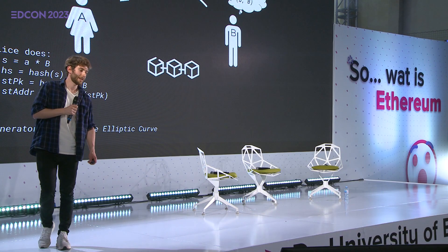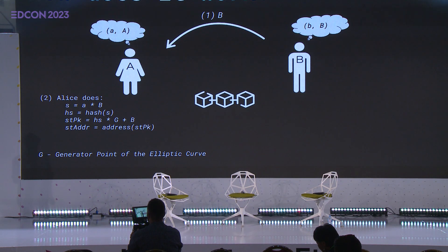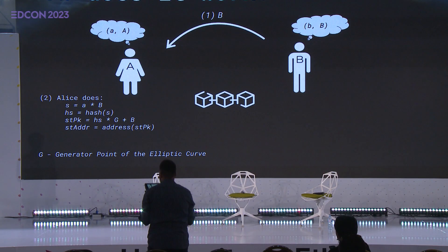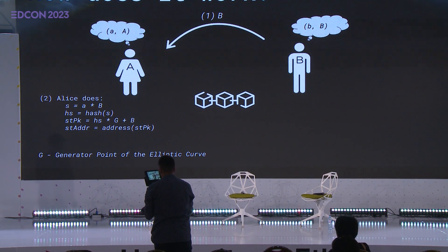Alice multiplies her own private key — a randomly generated private key — with the public key of Bob. She hashes the result, which gives her a hashed shared secret, and then she multiplies the hashed shared secret with the generator point of the elliptic curve, which gives her an elliptic curve coordinate. She can then add Bob's public key to it. Finally, this is called the stealth public key, and Alice can convert that stealth public key to an Ethereum address and send to it.